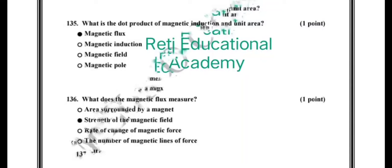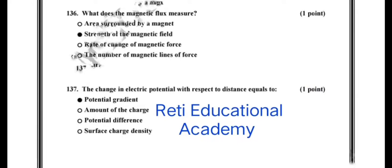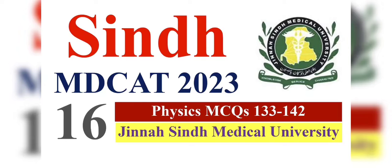Question number 137: the change in electric potential with respect to distance equals to potential gradient. This is the correct answer: potential gradient.